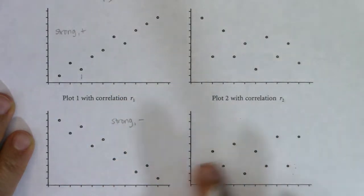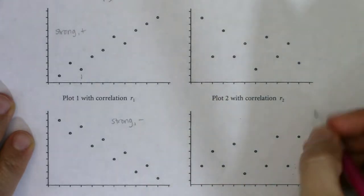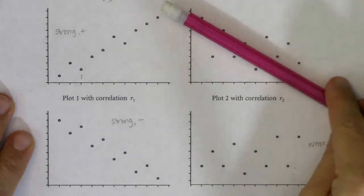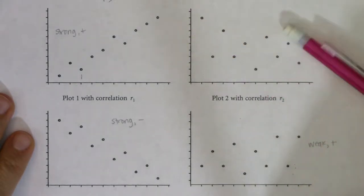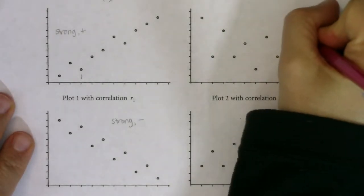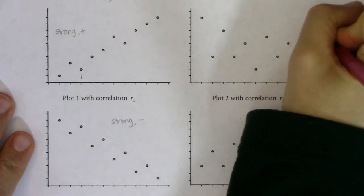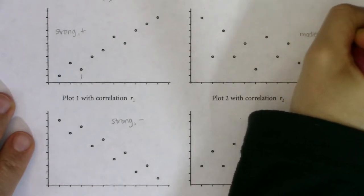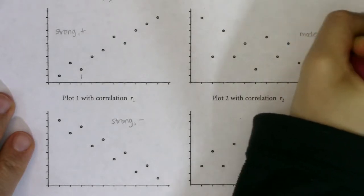This is weak and positive. And here, I mean, to me, it looks negative. I would say this is moderate or weak. I mean, I need the actual R value to determine, but to me, moderate to weak, just depending, and negative.